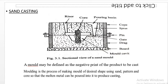The main parts of sand casting are: core, mold cavity, riser, basin, cap, sprue, pin, drag, and mold cavity.